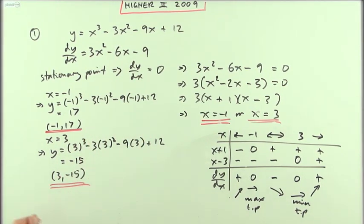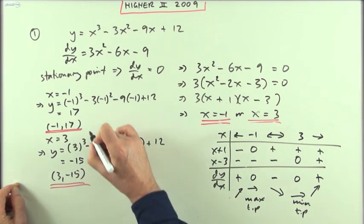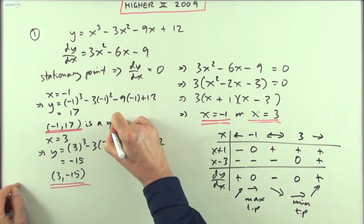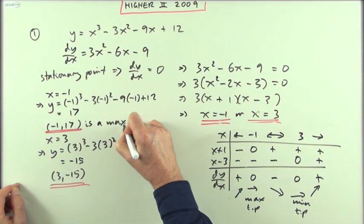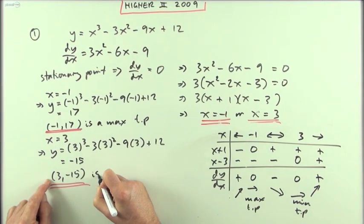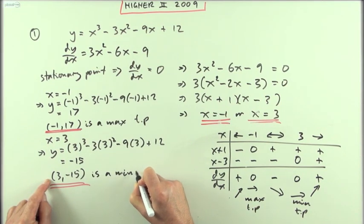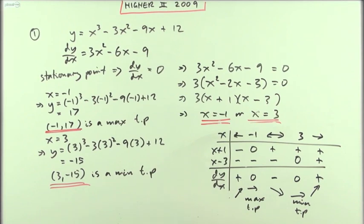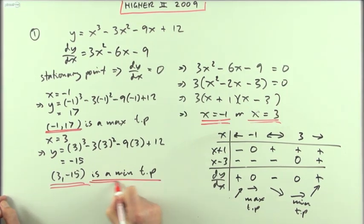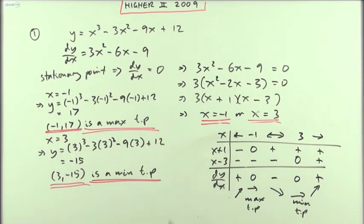So putting it all together: (−1, 17) is a maximum turning point and (3, −15) is a minimum turning point. You could spell it out in full words if you like, but that would do for number one.